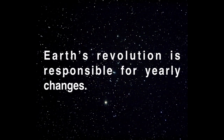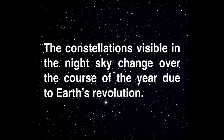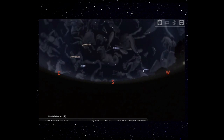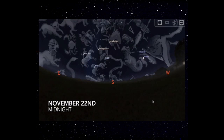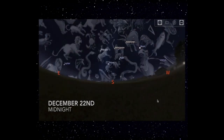Every day, the Earth moves one degree in its orbit around the Sun. That's really not hard math to figure out. If it's 365 days in a year and a circle is 360 degrees, if I did that division, it would be about one. So the Earth moves about one degree per day as it revolves around the Sun.